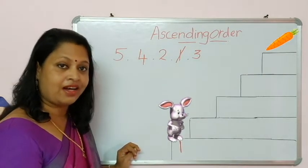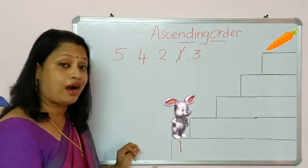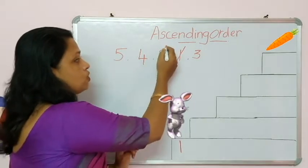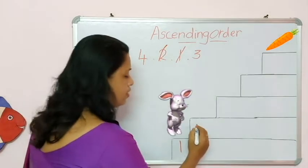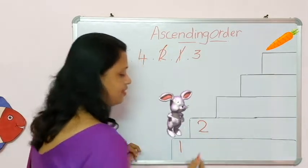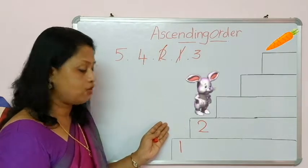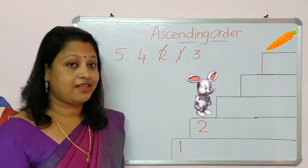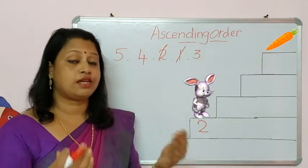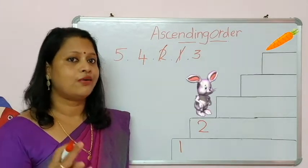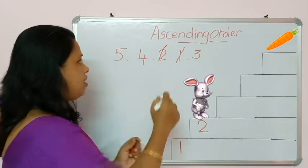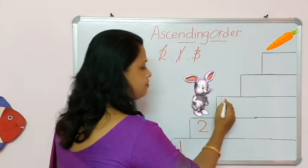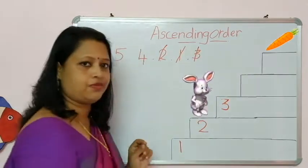Now which is the next number? What comes after 1? Right, 2. So cut number 2 and write it here. Now the bunny is on number 2. What comes after number 2? Right, 3. So cut 3 and write 3 here.